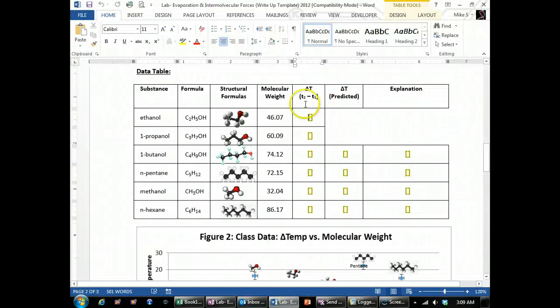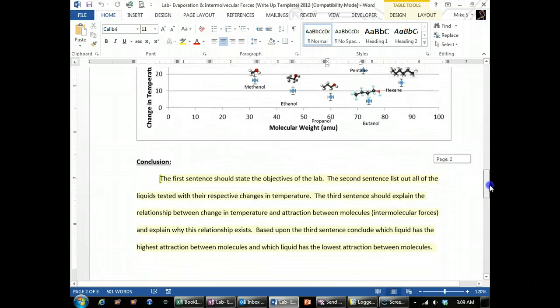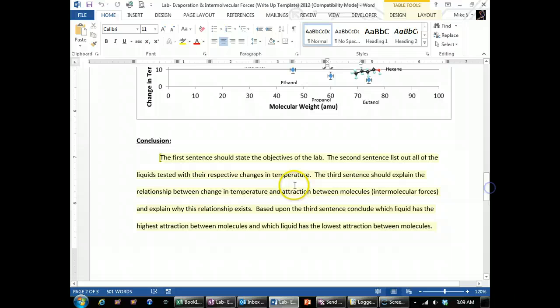And it also looks like in this case ethanol, the lowest point is not the last value. Going back to the write-up, once you've entered in all your delta Ts, you also want to make sure that you put in what you put for your predictions.